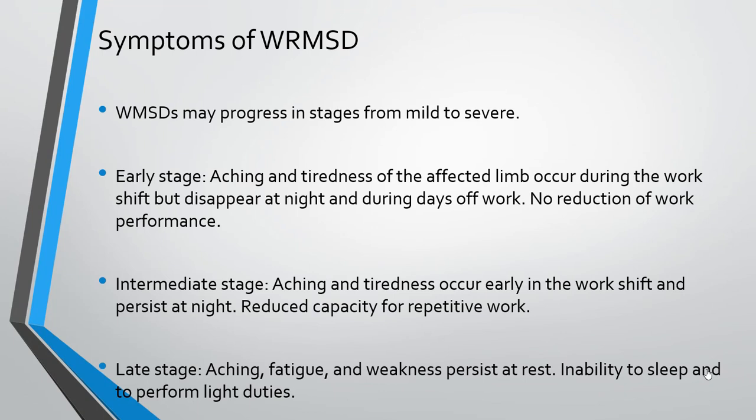The symptoms of work-related musculoskeletal disorders may vary with time and stages, ranging from mild to severe. In early stages, there might be aching and tiredness of the affected limb during the work shift, disappearing at night, with no reduction in work performance. In intermediate stages, aching and tiredness occur early in the work shift, may persist at night, and reduce the capacity for repetitive work. In later stages, there might be aching, fatigue and weakness which persist at rest, potentially leading to inability to sleep and perform light duties.